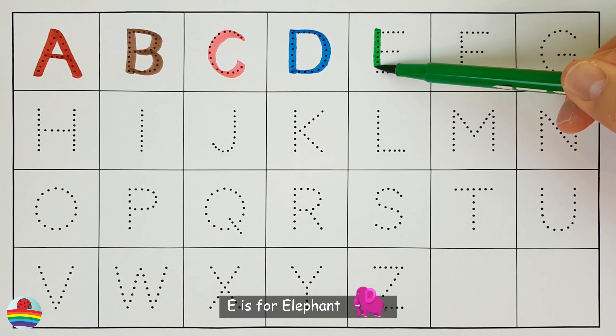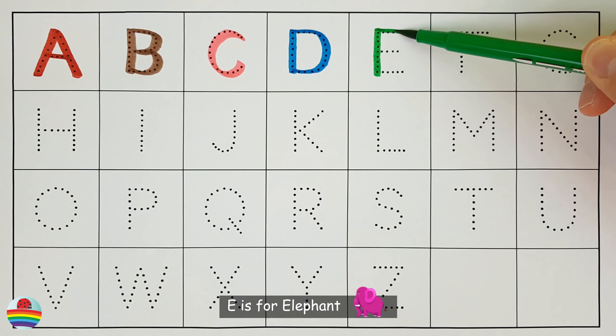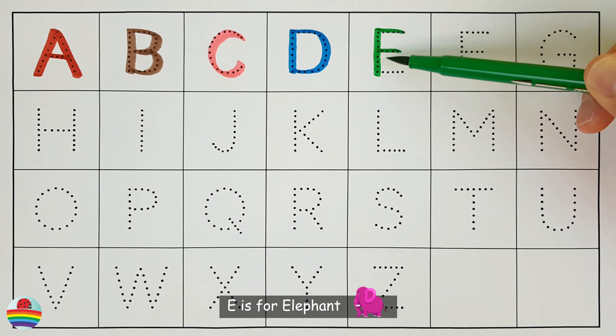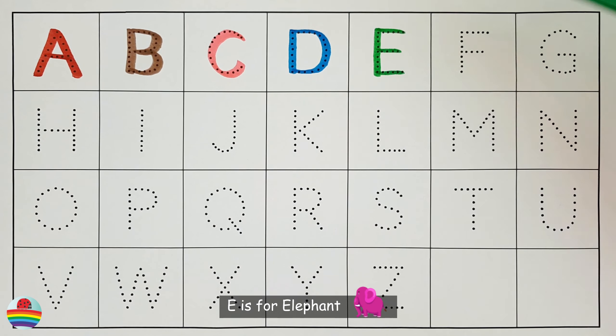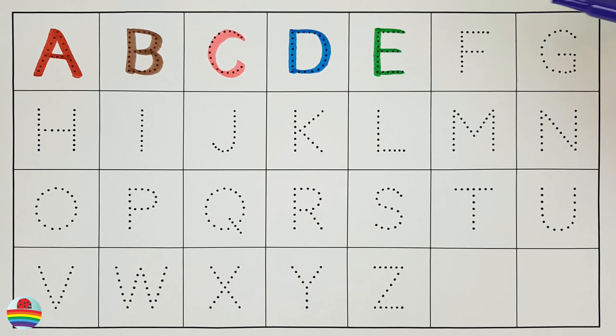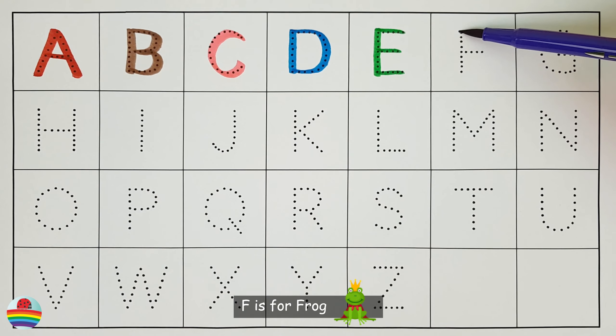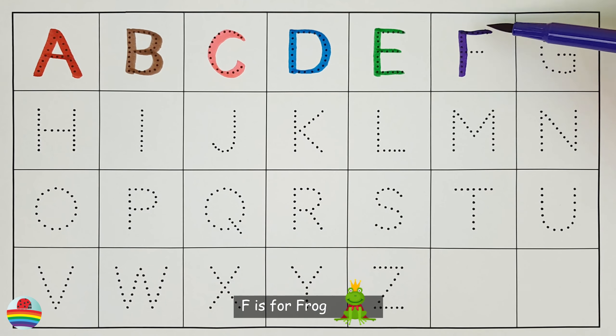E. E is for elephant. E. F. F is for frog. F.